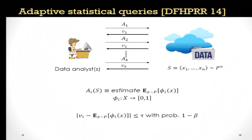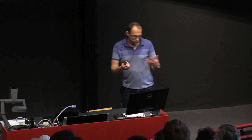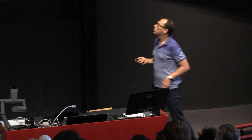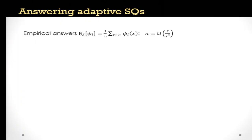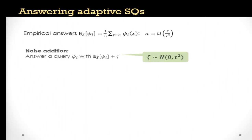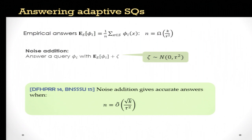This problem captures the difficulty well. If you just use empirical means to estimate these expectations, the number of samples you would need in the worst case to obtain accuracy guarantees will scale linearly with the number of queries — which is very bad. But it turns out that if you add noise with variance roughly equal to the accuracy you're aiming for, this allows you to use a number of samples that scales only as the square root of the number of queries.